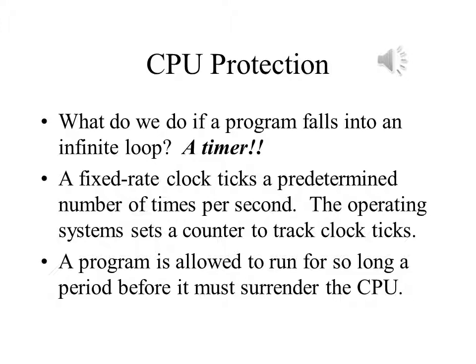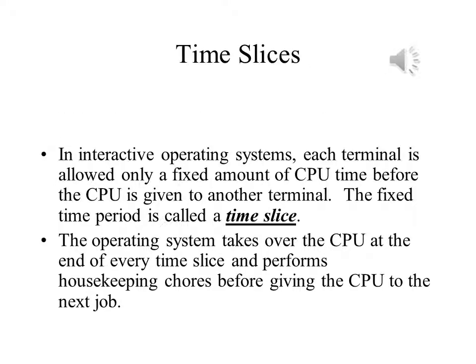This same clock allows the computer to keep track of the time of day and the date as well. Interactive operating systems give each terminal a certain amount of processor time, and then move on to the next terminal. Generally, each terminal has the same fixed amount of time, what we call a time slice. The length of a time slice will vary from one system to another, but each terminal on a given system will be given the same time slice. At the end of each time slice, the operating system will take over and perform miscellaneous housekeeping chores before attending to the next terminal.